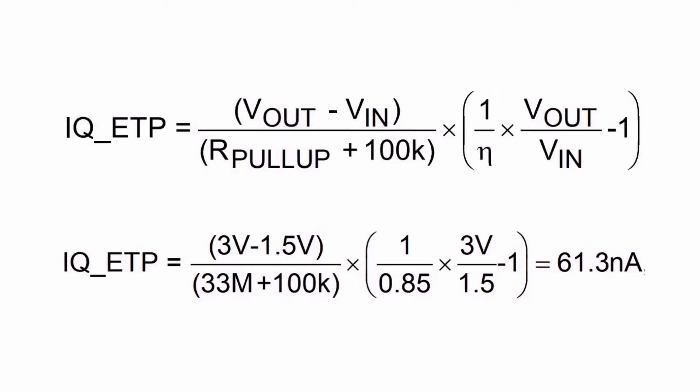Hence, a part configured as shown will have a quiescent current of 767.7 nano amperes, which is the sum of the input quiescent current, the transient protection current, and the output quiescent current.